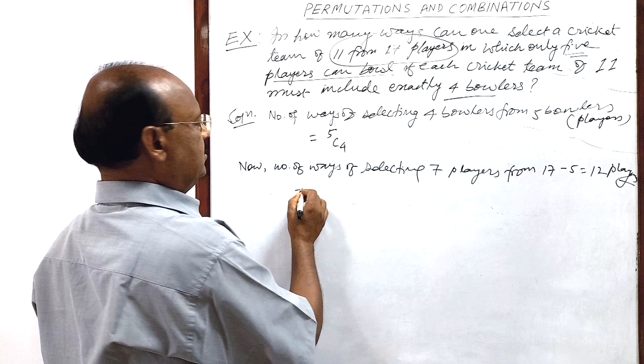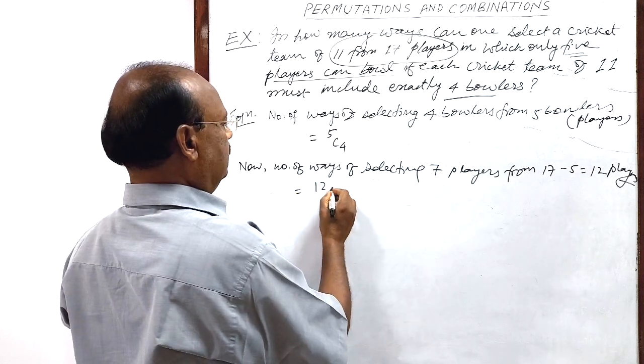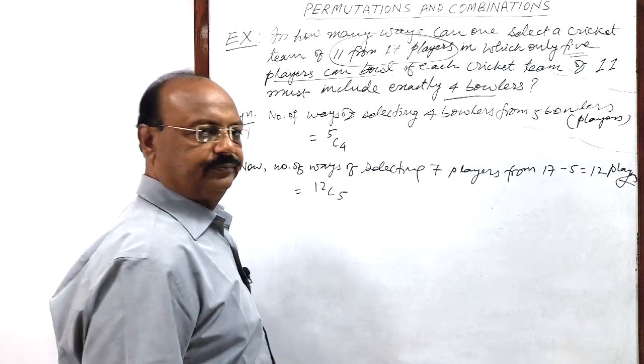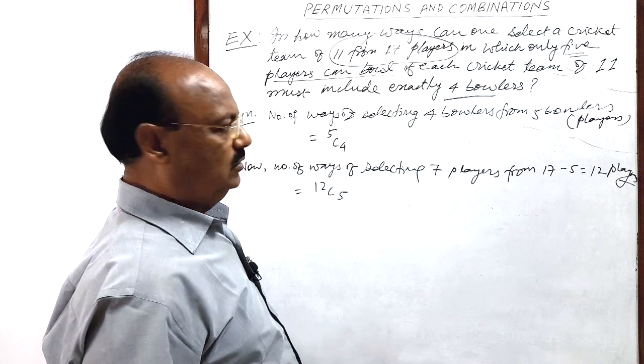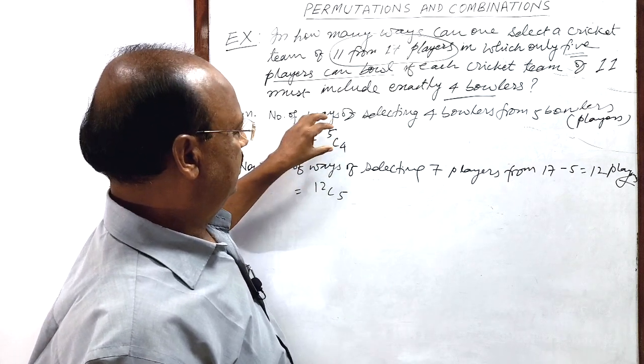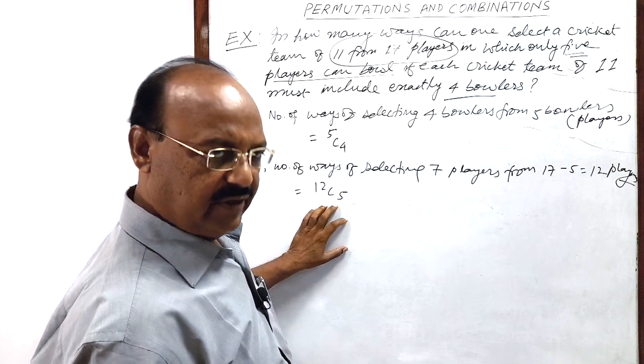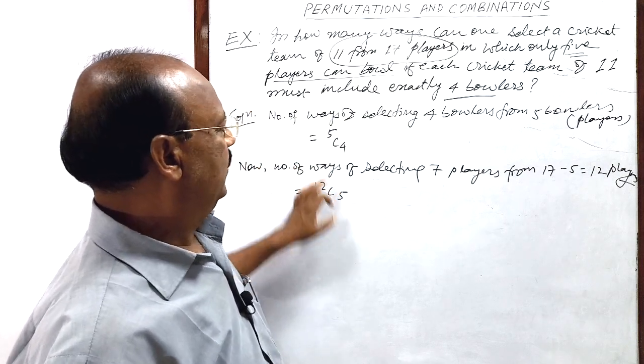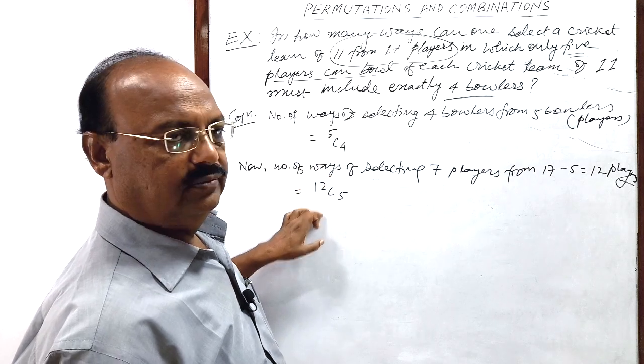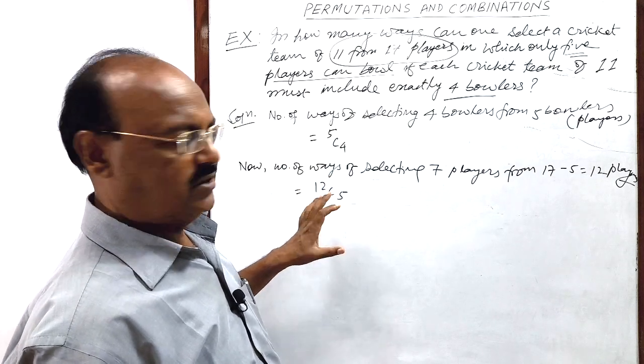In how many ways? 12C5. So up to some part, we have done this job. The remaining part will be done by this many ways. So we have to multiply both of them to get the answer.